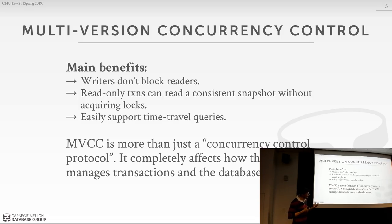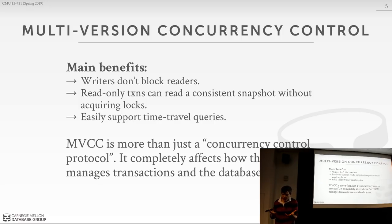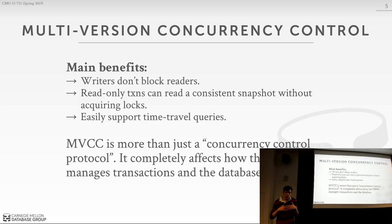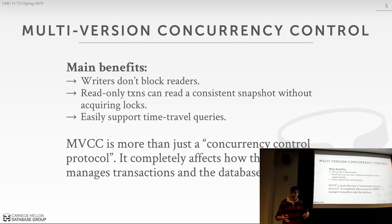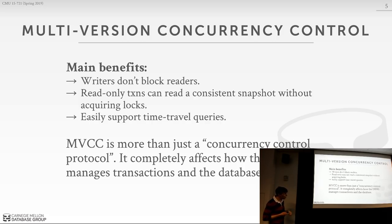The key thing from the assigned paper is that MVCC — despite concurrency control being in the name — is more than just a concurrency control protocol. If you want to support multi-versioning in your database system, it's going to affect the entire architecture of the system. There are a bunch of design decisions we'll have to deal with in order to implement this efficiently and correctly.